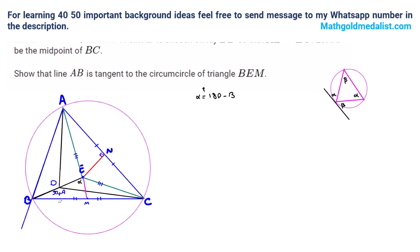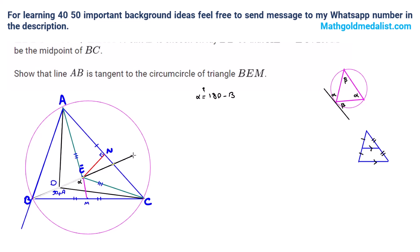Now we draw the circumcircle, and another useful idea: by the midpoint theorem, if we have a midpoint configuration, the line segment is parallel to the base. We want to prove this angle is 180 minus B, and we have one midpoint. So if we extend BD such that E is the midpoint of segment BF, then EF is parallel to the relevant line by the midpoint theorem. Let's extend BD to point F, so we have B, D, E, F, where E is the midpoint. Now we know this angle is alpha, and we need to prove alpha is 180 minus B.